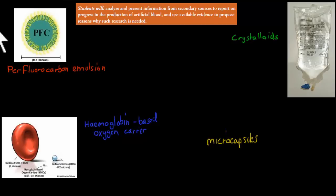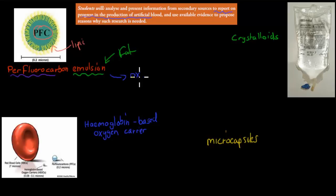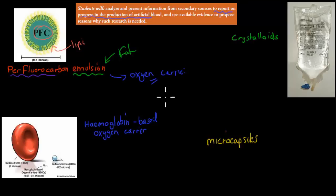Now, the next part is reporting on the progress in the production of artificial blood — how far are we? We can already make perfluorocarbon emulsions. The term 'emulsion' refers to fat, because the perfluorocarbon molecule is actually inside a fat or lipid molecule — you can see the lipids surrounding it. This acts as an oxygen carrier, serving as a replacement for our hemoglobin. So we can already make perfluorocarbon emulsions, and these help us carry oxygen. If we don't have enough red blood cells, these emulsions can perform the same function.